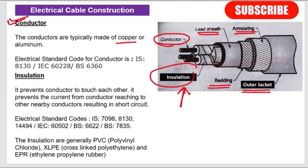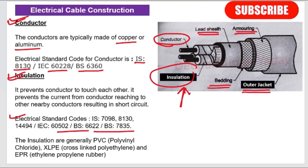Conductors are generally made of copper or aluminum. Electrical standard codes for the conductor are IS 8130, IEC 60228, and BS 6360. The insulation prevents conductors from touching each other, preventing current from reaching nearby conductors and causing a short circuit. Electrical standard codes for insulation are IS 7098, IS 8130, IS 14494, IEC 60502, BS 6622, and BS 7834.